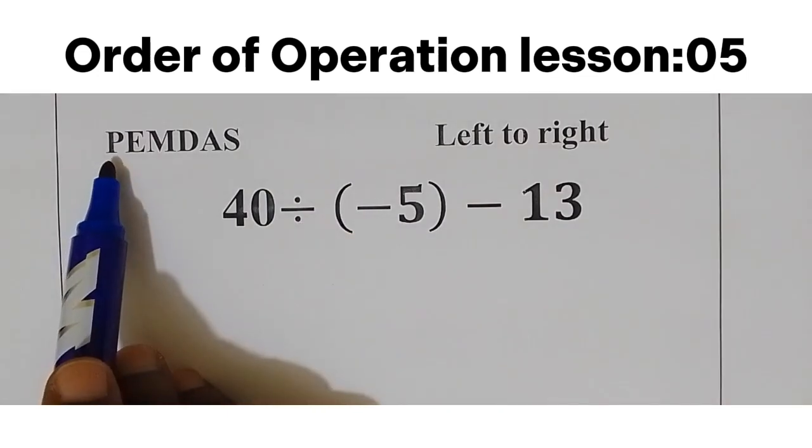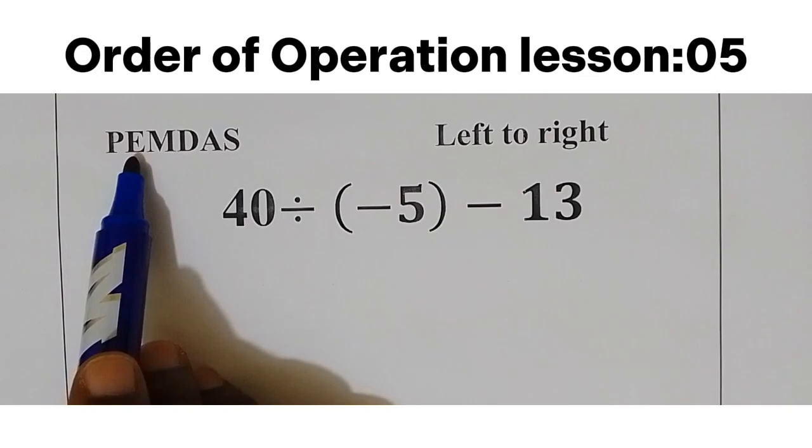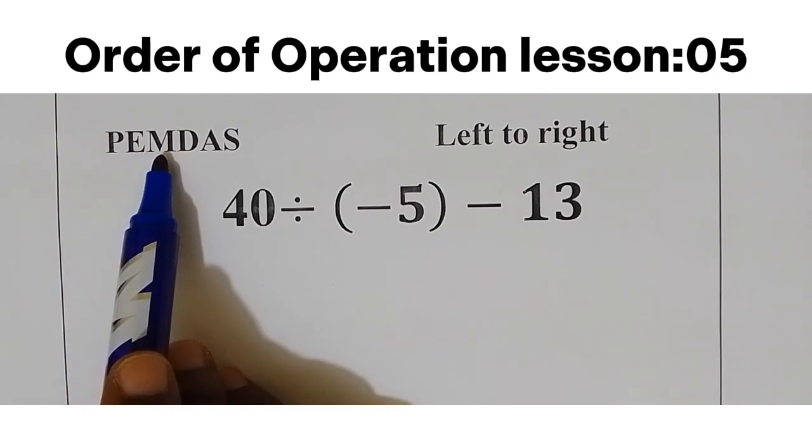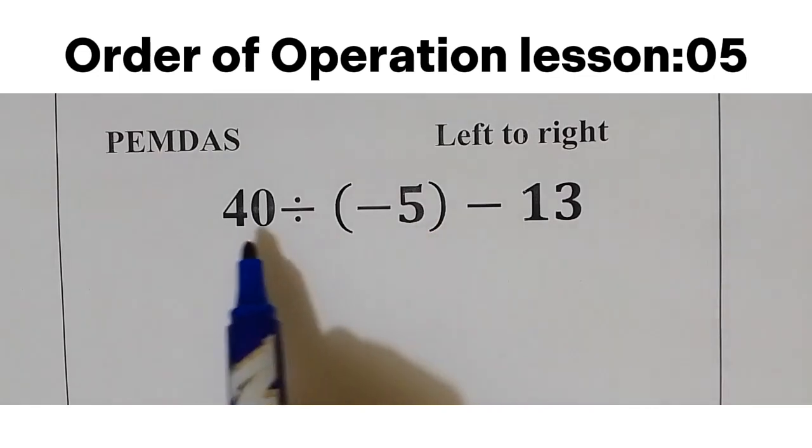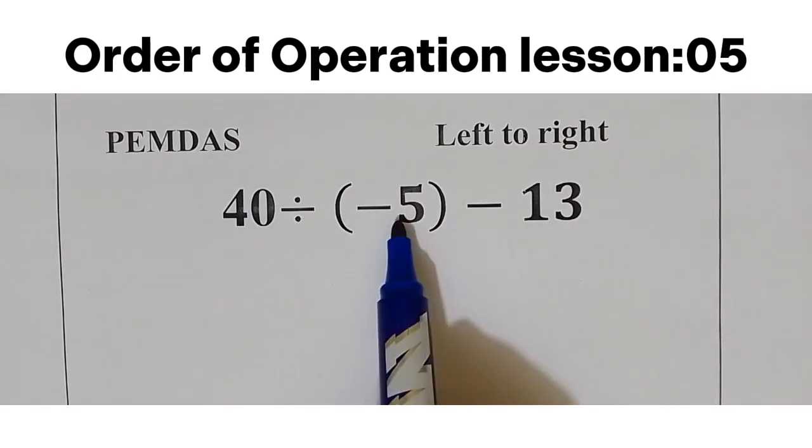When we check our question here, we have division and subtraction. According to PEMDAS, we don't have any parentheses, we don't have any exponent, we don't have multiplication, but we have division, so we are going to start here to divide. We will take 40 divide by minus 5.